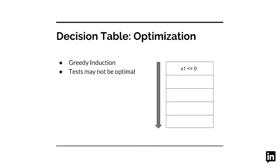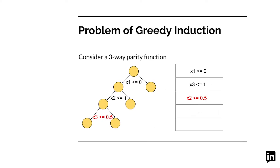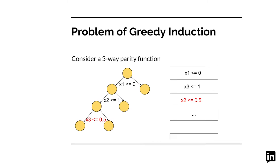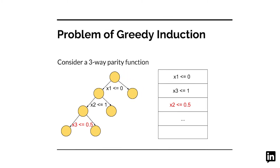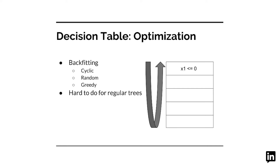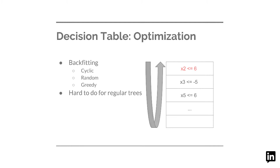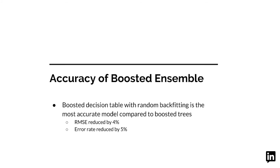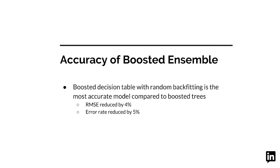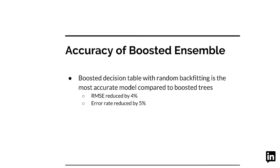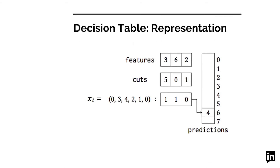In this work, we propose a greedy procedure to fit decision tables that finds the tests one by one. However, by the greedy nature of the procedure, tests may not be optimal. This is a common problem for regression trees as well. We propose a novel backfitting algorithm to correct some of the suboptimal tests. Notice that it is the simple structure of the decision table that allows us to backfit, while it is hard to backfit a regression tree.